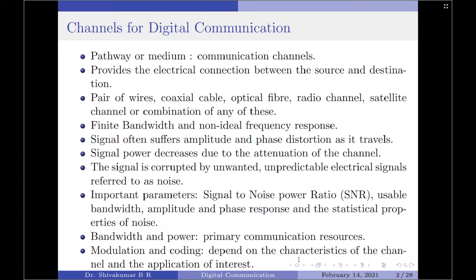The signal often suffers amplitude as well as phase distortion as it travels over the channel. Also, the signal power decreases due to attenuation of the channel. The signal is corrupted by unwanted, unpredictable electrical signals, commonly referred to as noise. Some of the most important parameters of the channel are signal-to-noise ratio (SNR), usable bandwidth, amplitude and phase response, and the statistical properties of the noise.